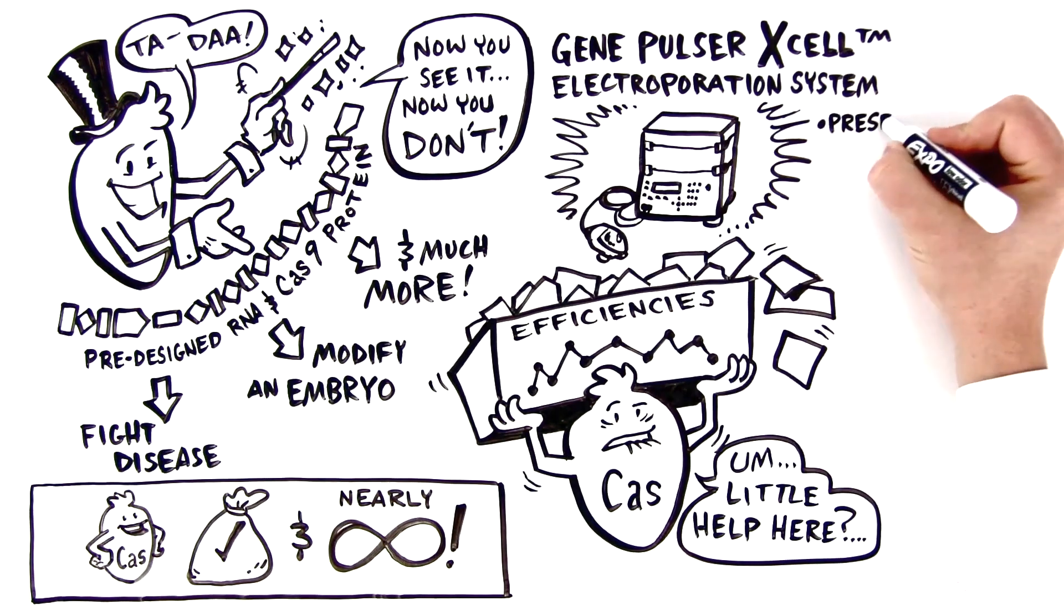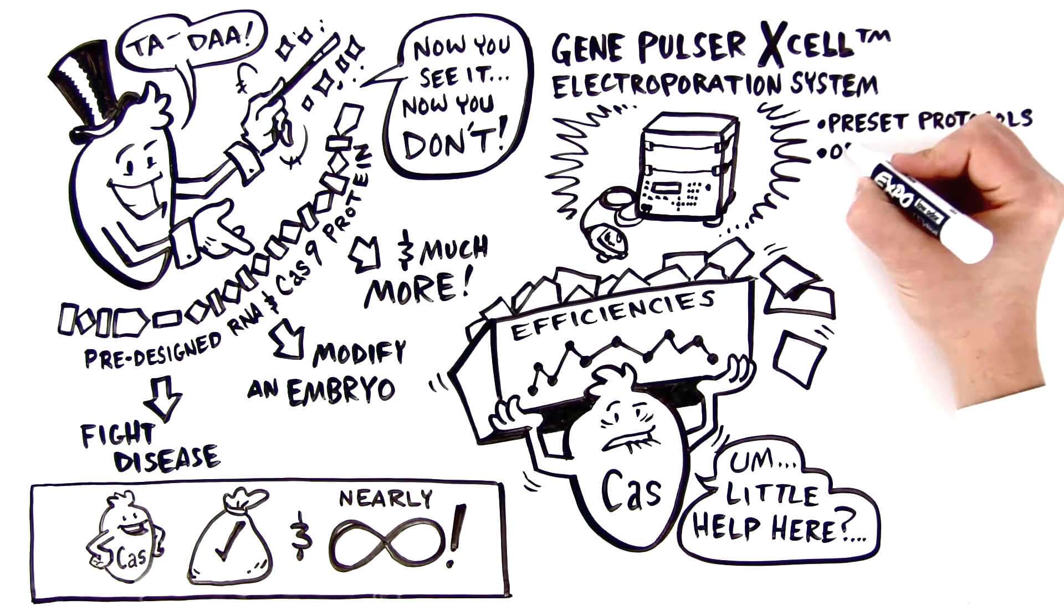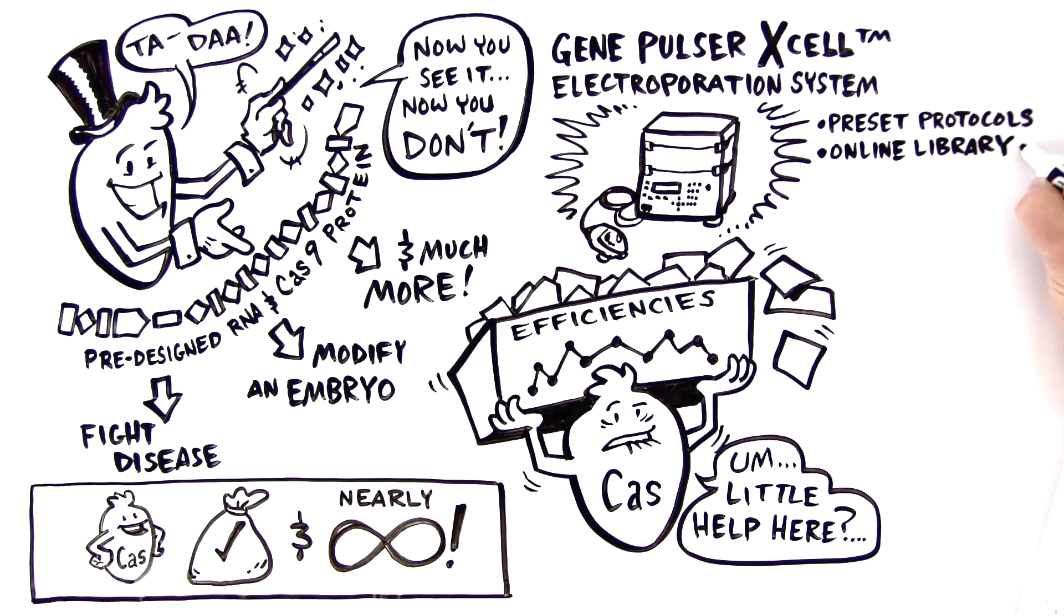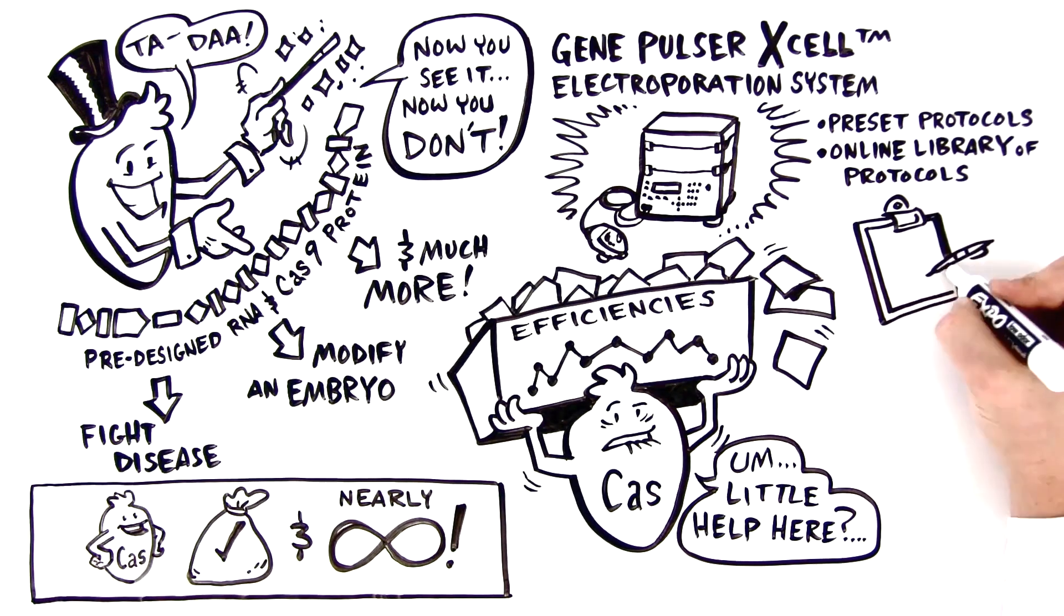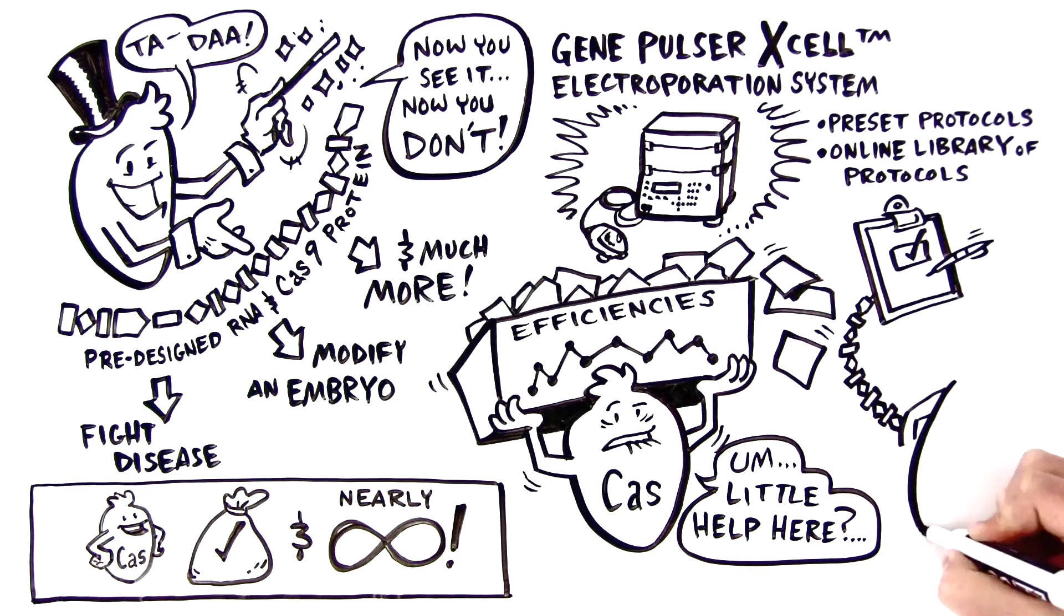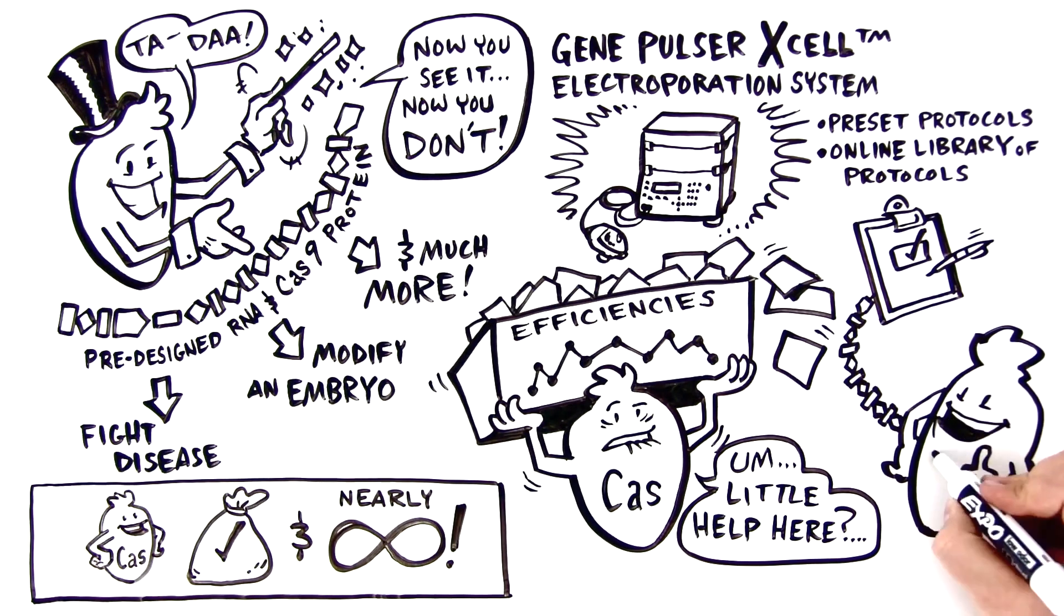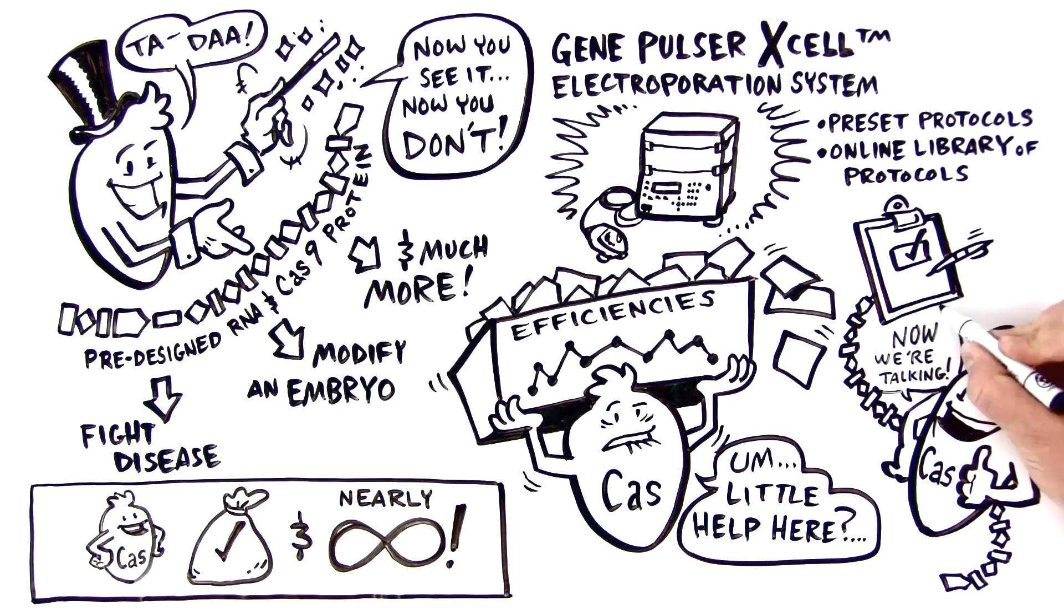And with pre-set protocols for the most common cell types, as well as a readily available online library of protocols, you'll find the right conditions for your electroporation needs every time. In short, Bio-Rad's Gene Pulsar XL takes the headaches right out of CRISPR experimentation.